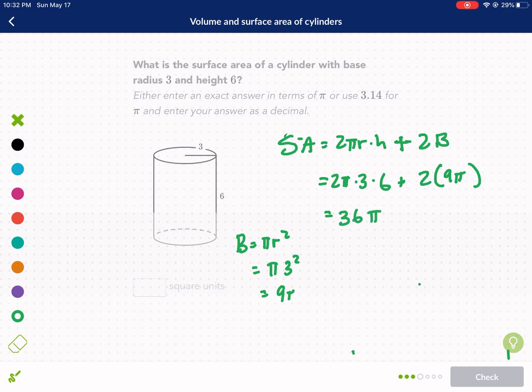That's 54π. It's going to be our surface area in square units. 54π square units.